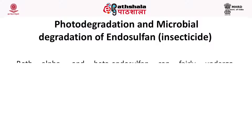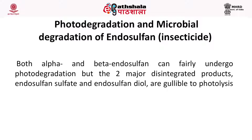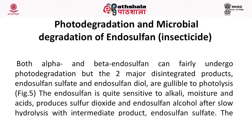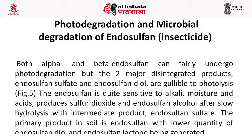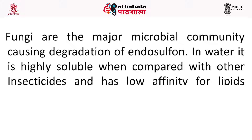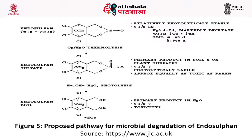Next is the photodegradation and microbial degradation of endosulfan insecticide. Both alpha and beta endosulfan can fairly undergo photodegradation, but the two major disintegration products — endosulfan sulfate and endosulfan diol — are resistant to photolysis. Endosulfan is quite sensitive to alkali, moisture and acids, producing sulfur dioxide and endosulfan alcohol after slow hydrolysis. The primary product in soil is endosulfan sulfate, with lower quantities of endosulfan diol and endosulfan lactone being generated. Fungi are the major microbial community causing degradation of endosulfan. In water, it is highly soluble compared to other insecticides and has low affinity for lipids, depicting lower biomagnification and accumulation in food chains. The degradation pathway has been shown in a figure.